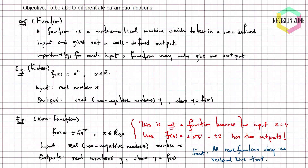On the A-level syllabus, most functions you encounter take in real numbers and throw out real numbers. But not all functions are like that — in fact the vast majority of interesting functions do other things. There are functions that take in real numbers and throw out vectors, functions that take in vectors and throw out vectors. For our purposes, parametric functions are one of the first things on the A-level syllabus where we stick in real numbers but get out points.